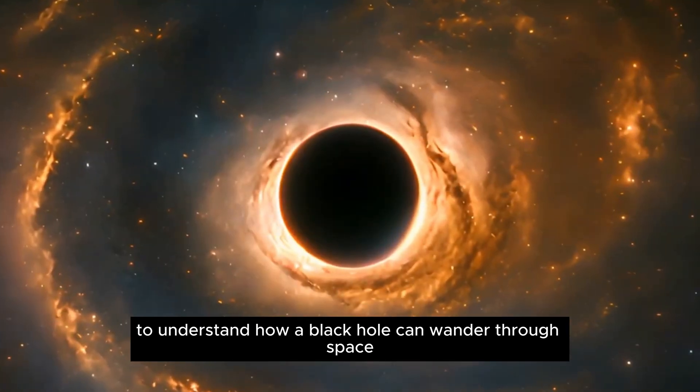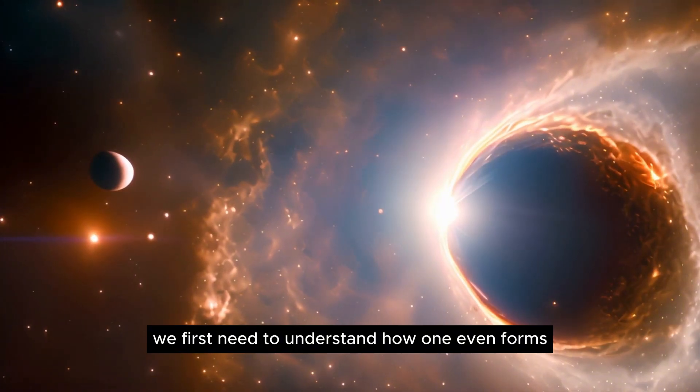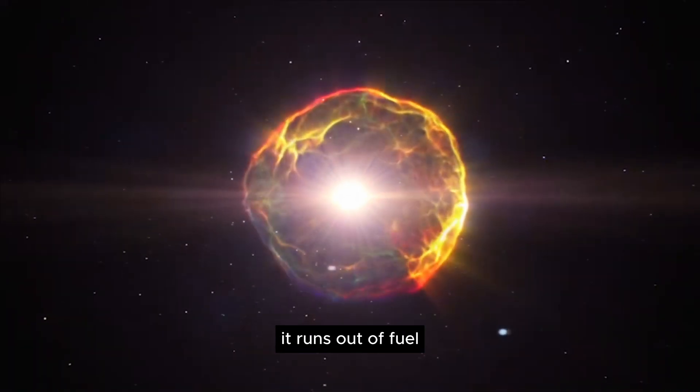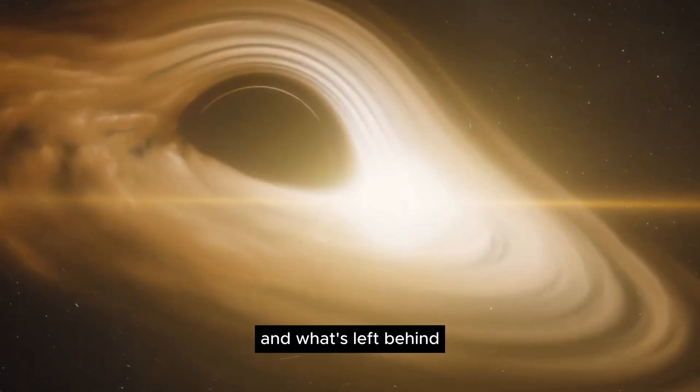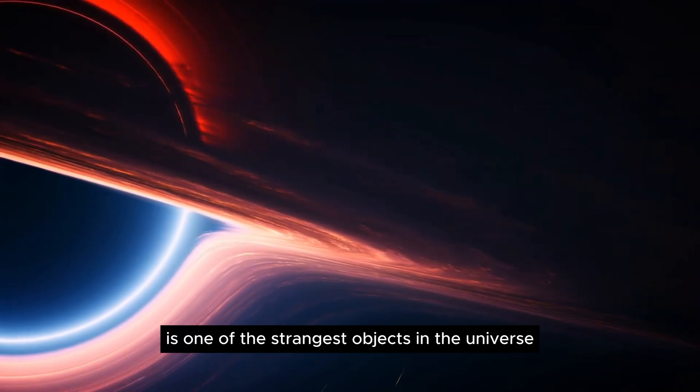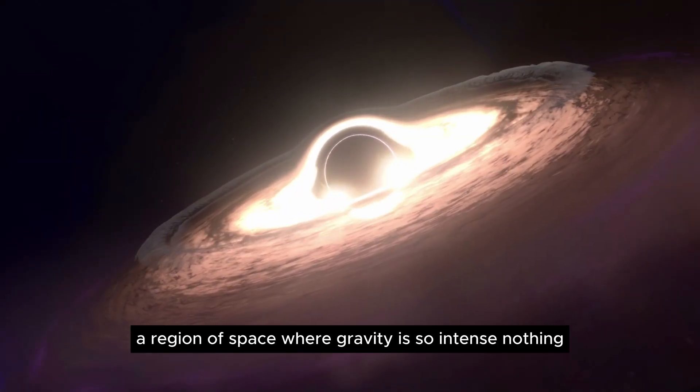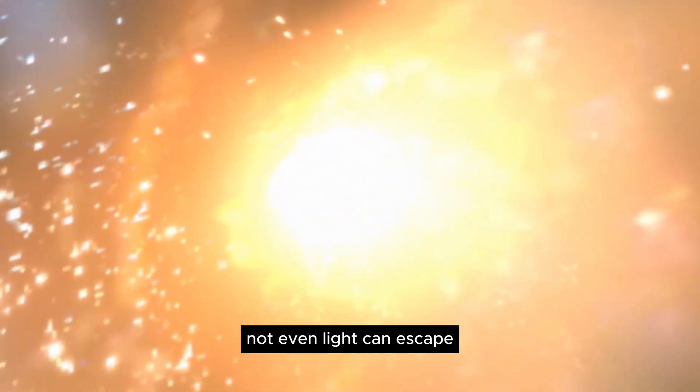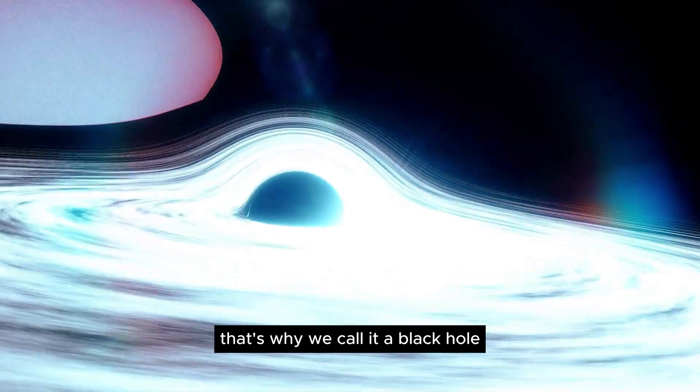To understand how a black hole can wander through space, we first need to understand how one even forms. Most black holes are born when a massive star reaches the end of its life. It runs out of fuel. Its core collapses under its own gravity. And what's left behind is one of the strangest objects in the universe: a region of space where gravity is so intense, nothing, not even light, can escape. That's why we call it a black hole.